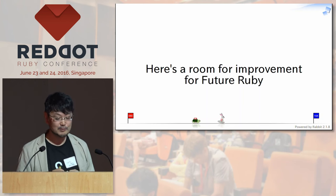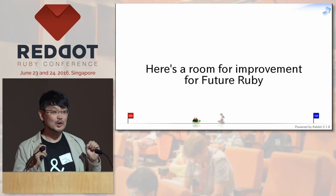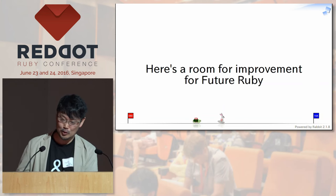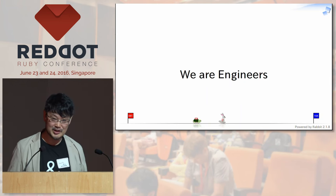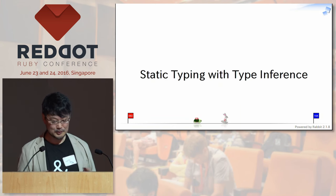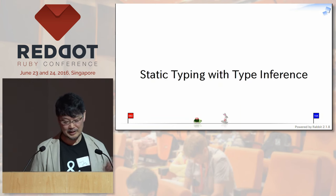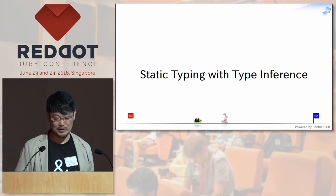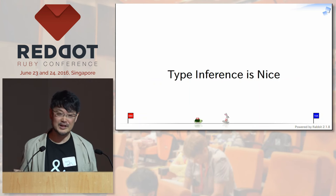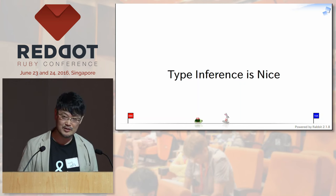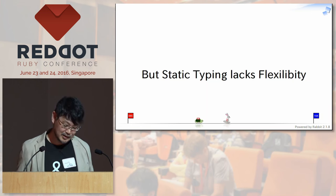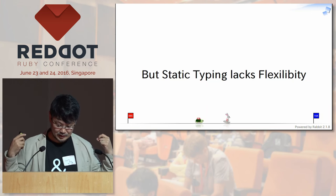Here's room for improvement for future Ruby. We don't want to write types, but we want to have some kind of type information from code. We are engineers, so we try to solve problems with technology. One candidate is static typing with type inference. Type inference is nice — by inferring from code, you can have type information without writing it. But static typing still lacks flexibility, as I explained before.